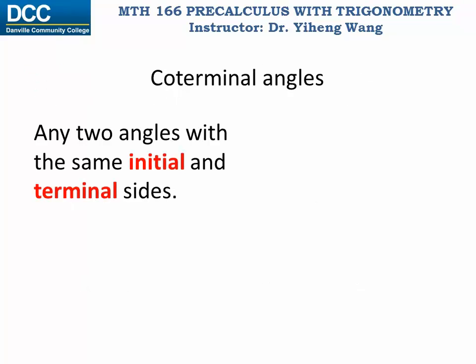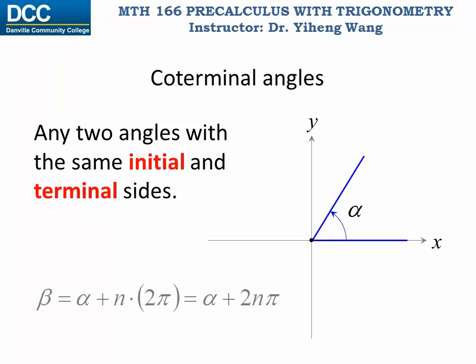If two angles have the same initial and terminal sides when they are drawn in their standard positions, they are known as co-terminal angles. To find a co-terminal angle of a given angle alpha, we can simply add 2nπ to it, where 2π represents a full revolution and n can be any integer — negative, positive, or zero.